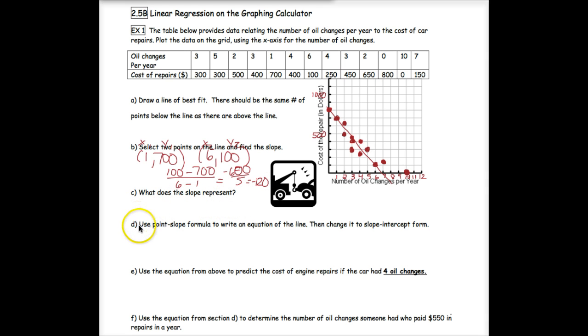We want to know what this means. What does the slope represent? You can see that it's got a negative correlation there. The trend is going down, which means that the slope, because it's negative, is representing a decrease. So what's decreasing? The y is decreasing. So a decrease in repair cost per oil change. That means that every time you get your oil changed, you're saving yourself $120 in car repairs for that year.